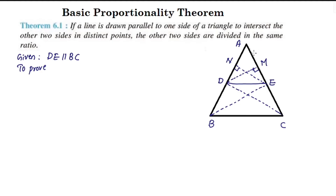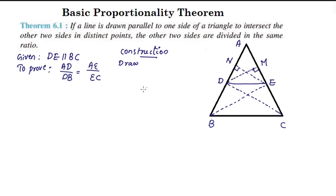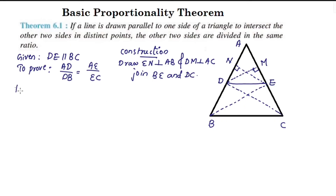To prove: AD by DB is equal to AE by EC. Construction: EN perpendicular to AB, and perpendicular to AC. Join BE and DC.